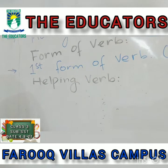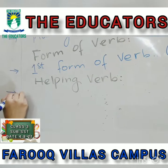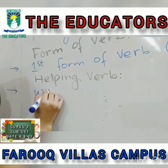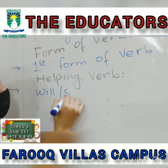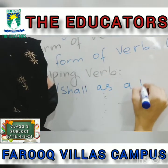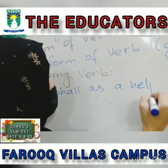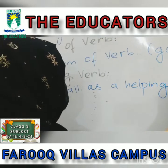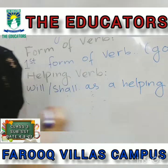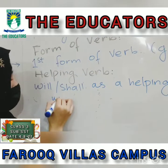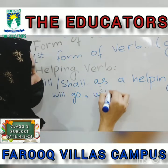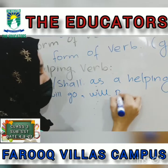In future tense we use 'will' and 'shall' as helping words. For example: 'will go', 'will play'.